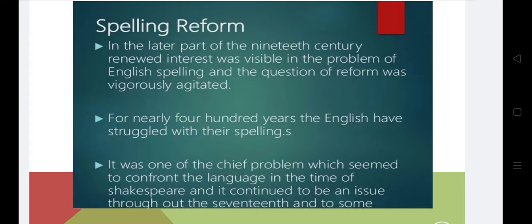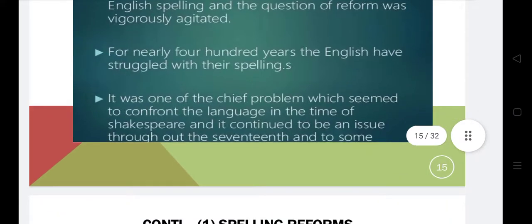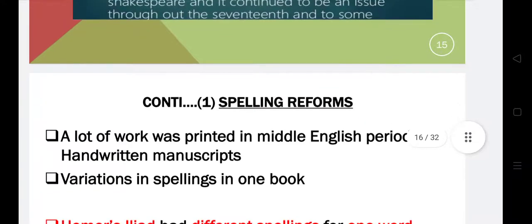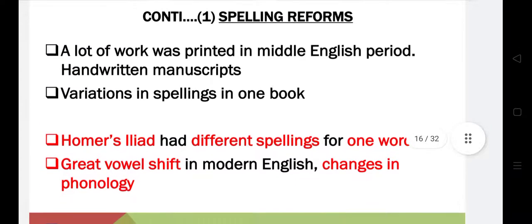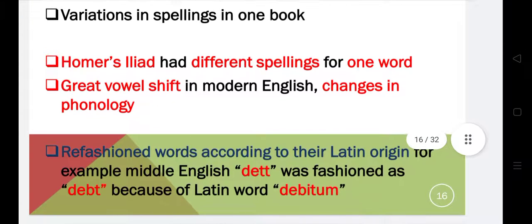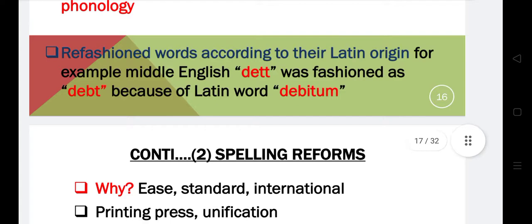The modern English we have today is a very simple version. For nearly 400 years, English has struggled with its spelling and it was a chief problem. They thought to refine the language and bring some spelling reform changes. A lot was printed in the Middle English period, with manuscript variation in spelling found even within one book. The Great Vowel Shift also took place, bringing changes in phonology and phonetics.